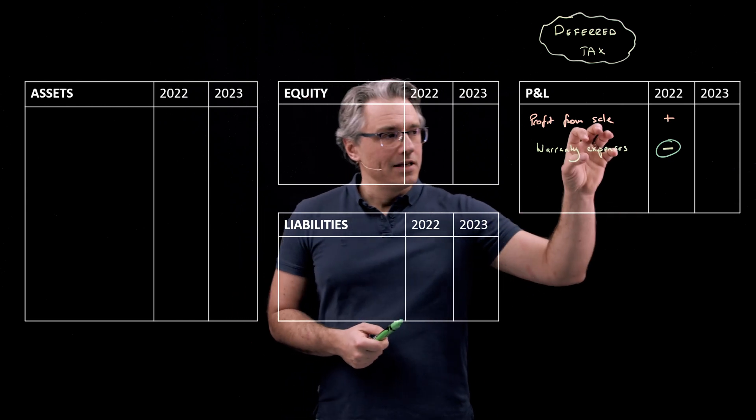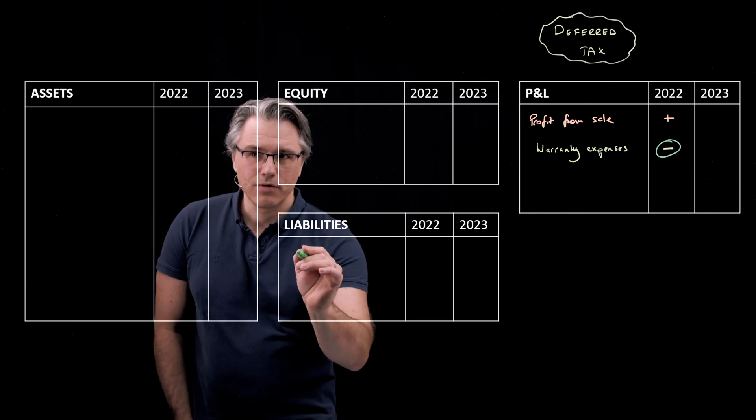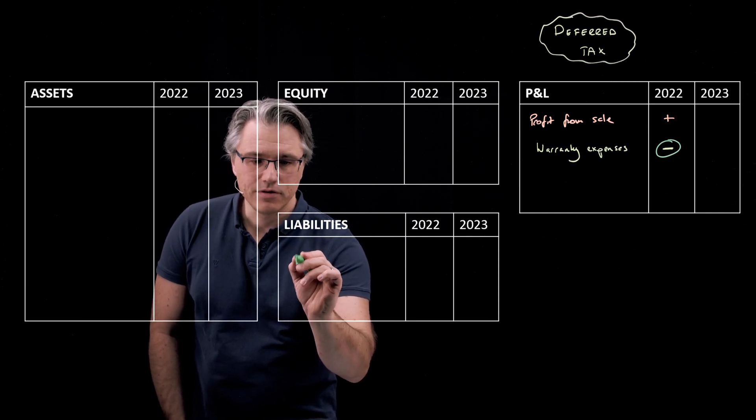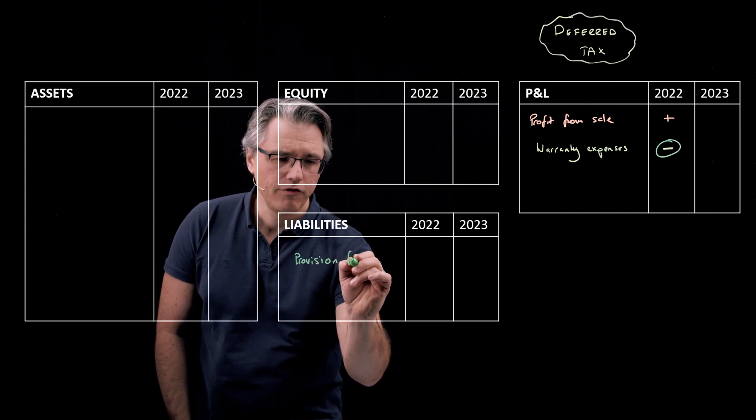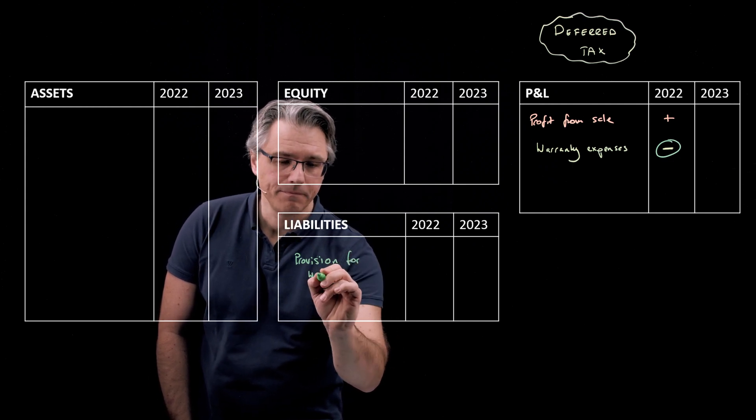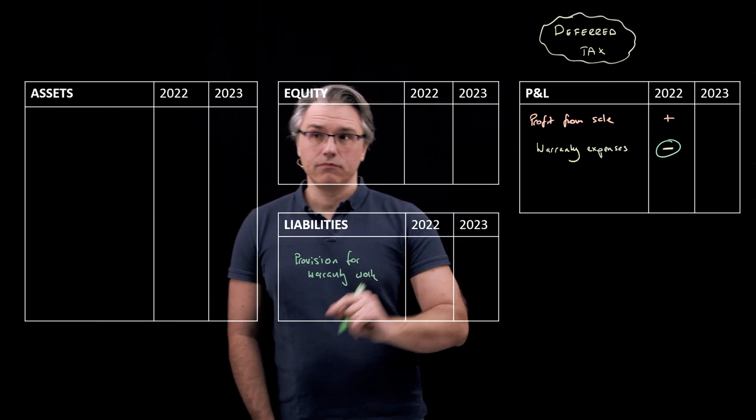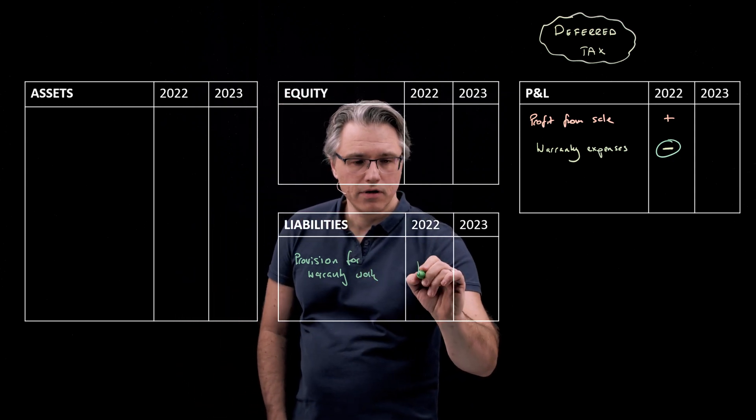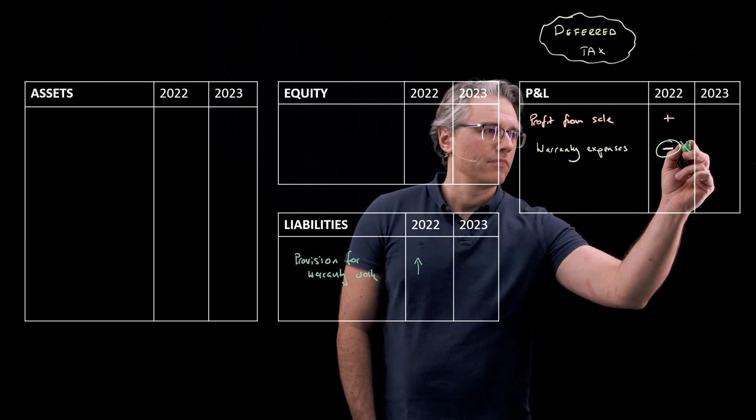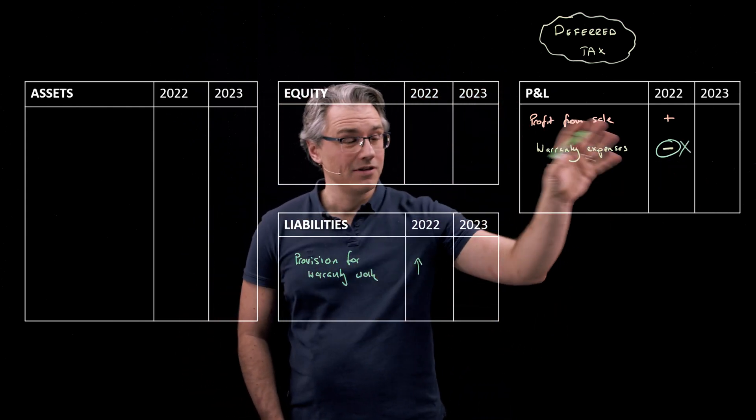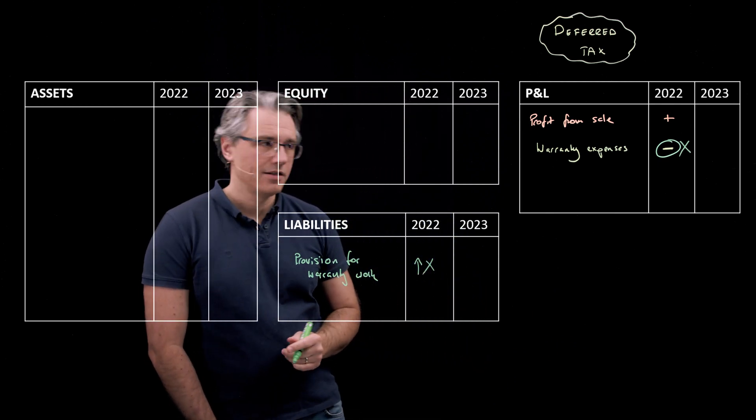At the same time, as we hit the P&L with this negative item, we also within our liabilities create an item called provision or provisions, provision for warranty expenses or warranty work, which comes in here as a liability. So our liabilities grow. And let's say this was an amount X, which hit our income statement or impacted our income statement negatively. And this also leads to the creation of a liability.